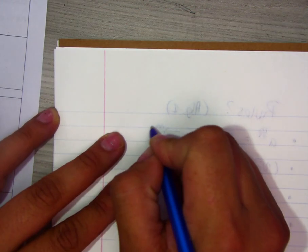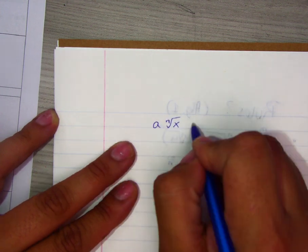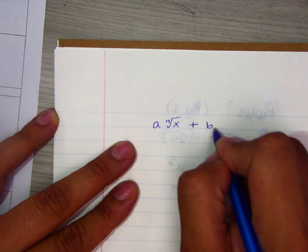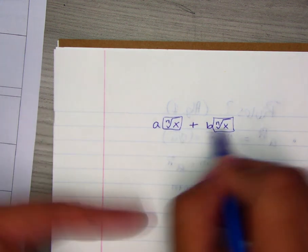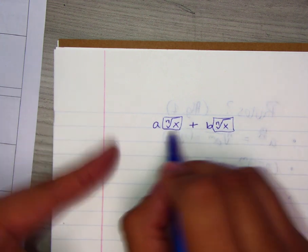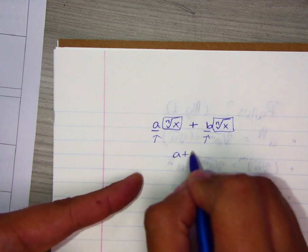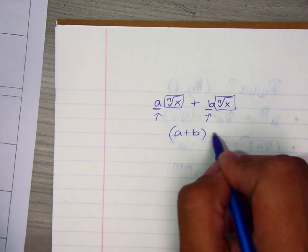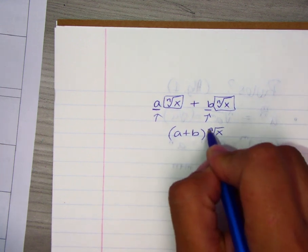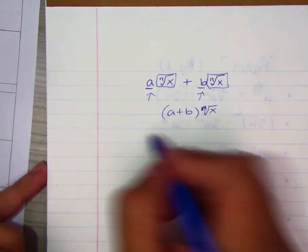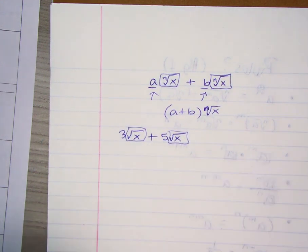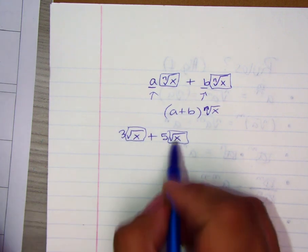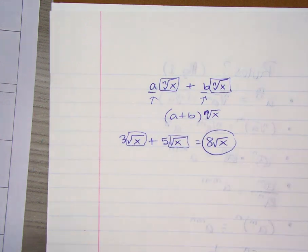Another Algebra 2 rule is combining radical expressions with coefficients. If you have a coefficient attached to a radical and you're adding or subtracting it from another coefficient with the exact same radical — same root and same radicand — you simply combine the coefficients. For example: 3 times the square root of x plus 5 times the square root of x. You recognize they're both square root of x, so you add 3 and 5 to get 8 square root of x. That's it.